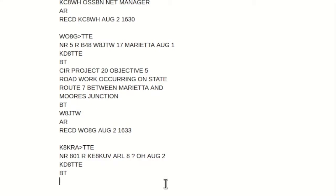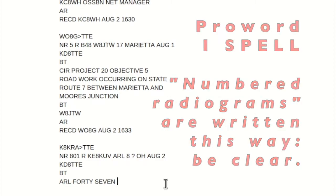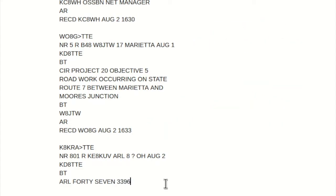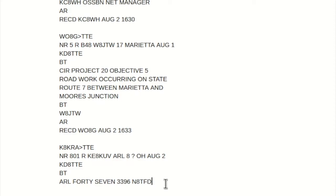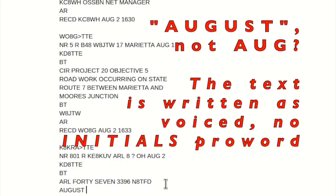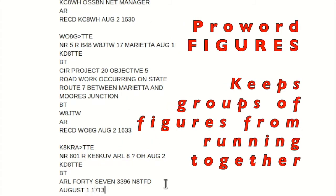Letter group Alpha Romeo Lima 14. I spell: Oscar Romeo Tango Yankee. 7. I spell Sierra Echo Victor Echo November. Figures 3-3-9-er-6. Amateur call November 8 Tango Foxtrot Delta. August, figure 1. Figures 1-7-1-3. Break.